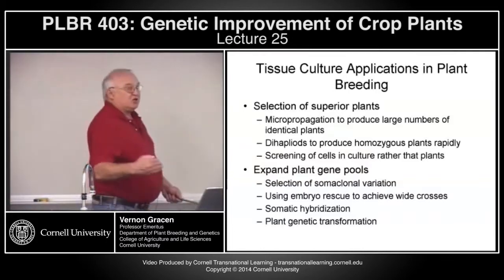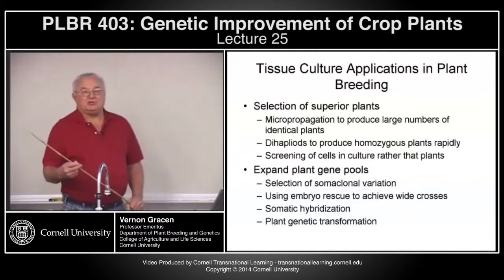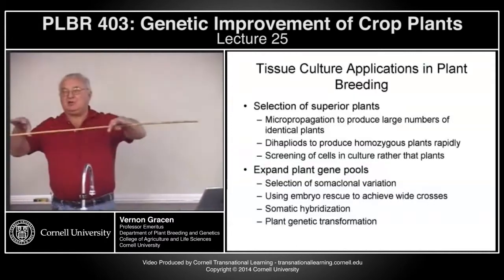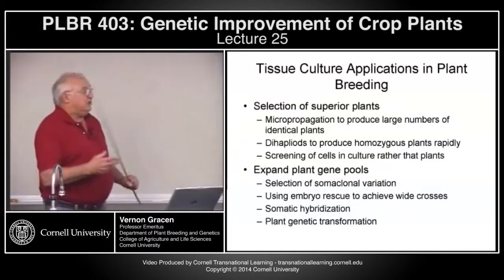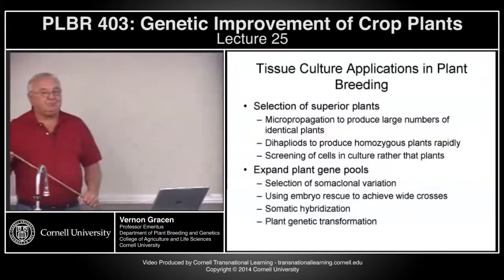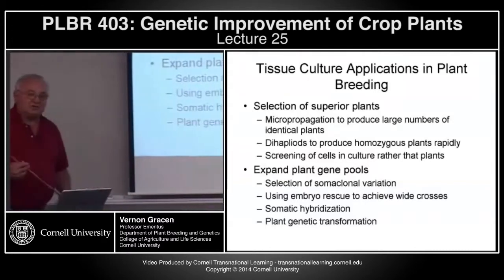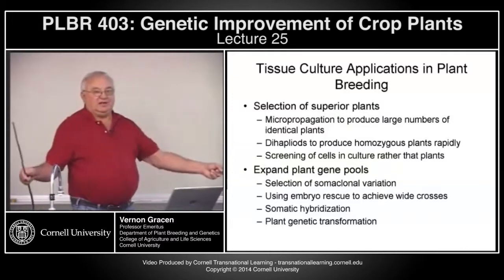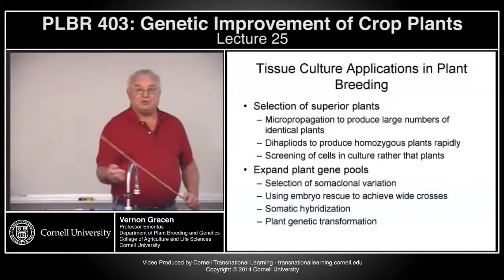Micropropagation is basically just cloning plants from cellular or callus material. Dihaploids, primarily using anther cultures to culture haploid materials and double them back to diploids. Then screening of cells in cultures and nutrient media rather than screening plants in the field. Expanding the gene pool — selection of somaclonal variation, which has resulted in some very useful new varieties. Embryo rescue is probably the most broadly used tissue culture technology in expanding gene pools because it allows wide genetic crosses and sort of approaches the genetic transfer capability of transformation. Somatic hybridization is basically development of protoplasts and fusing protoplasts to get hybrids.